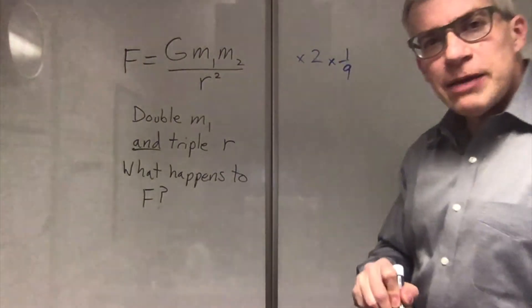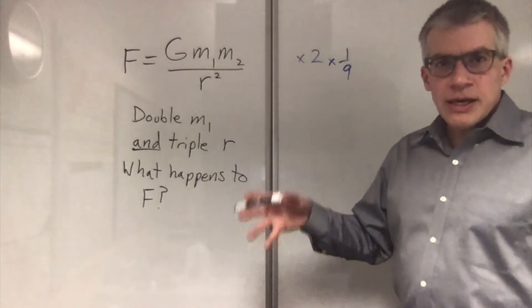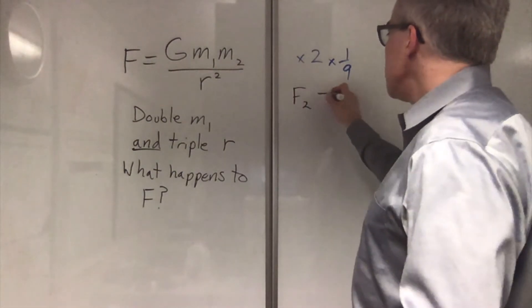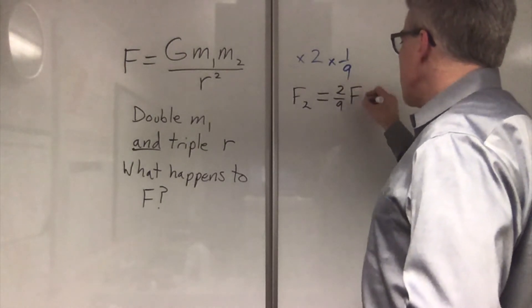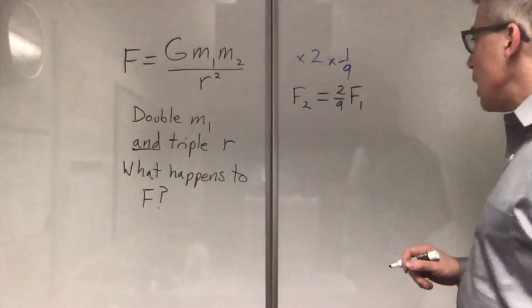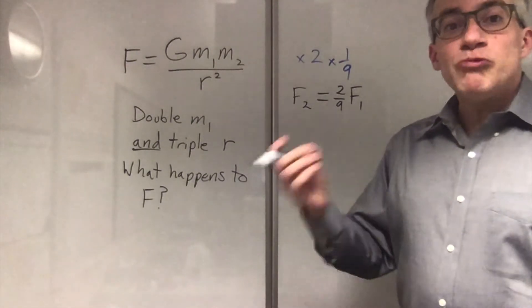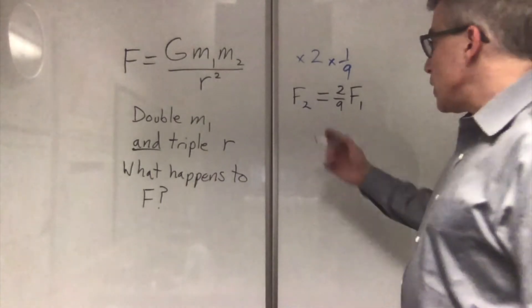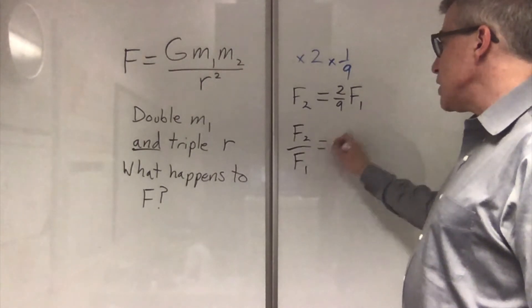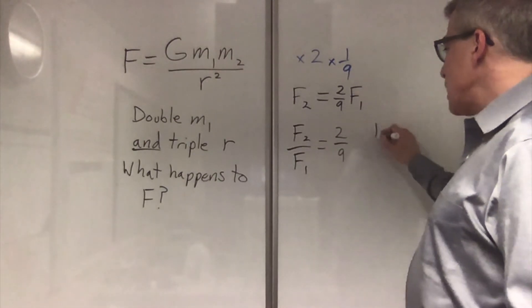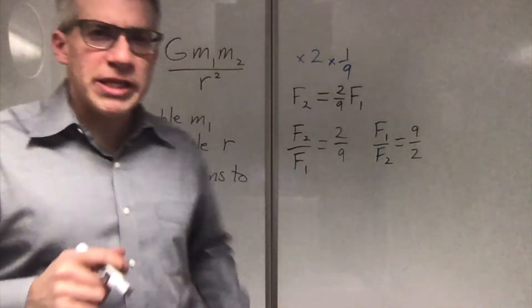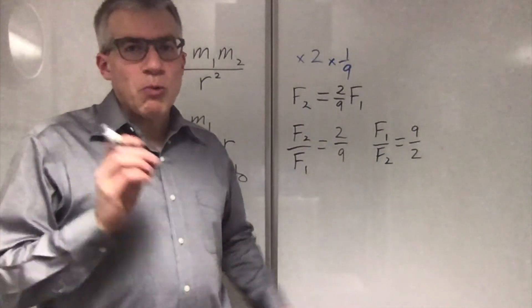Again, if you label the first situation with one and the second situation with two, then we would say that f2 is equal to two ninths of f1. So the new force is smaller than the original. Another way they might ask the question is, what is the ratio of f1 to f2? Or f2 to f1 is like that. F2 to f1 is 2 over 9. If they asked for f1 to f2, that would be 9 over 2. But they're not likely to ask that one. It's usually new over old. But watch the wording carefully.